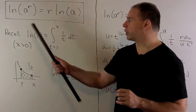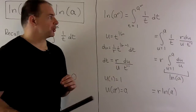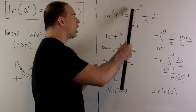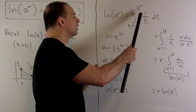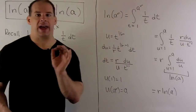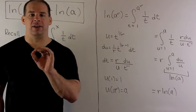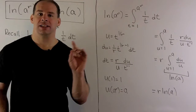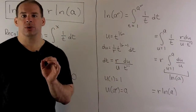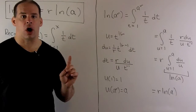Now for the first property, we set up our definition. Where we had an x before, I put a to the r. I want to turn this a to the r into an a — that'll let us go from natural log of a to the r to natural log of a. So the substitution I'm going to use: I let u equal t to the one over r.